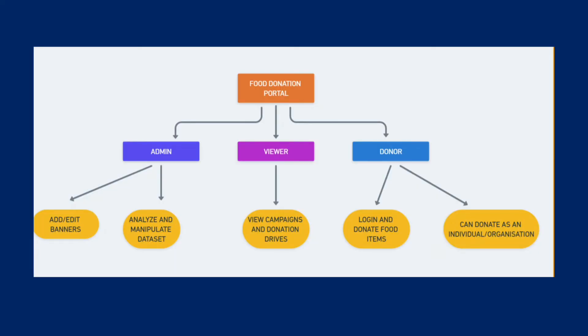This is the flowchart. Our application has pages primarily for three types of users: viewers, donors, and admin personnel. For the admin, campaign banners and posters are self-made and can be changed from time to time to reflect on the homepage. We analyze and record our progress with the remaining food items stock using visualization charts. This raises awareness in the viewer that their contribution makes an impact and goes a long way in helping the underprivileged.